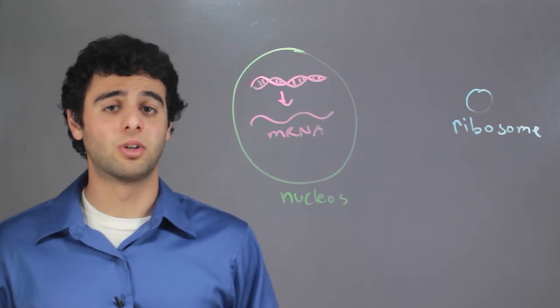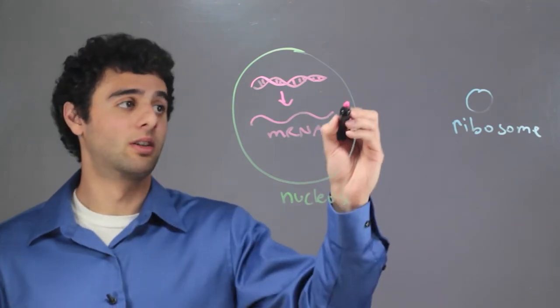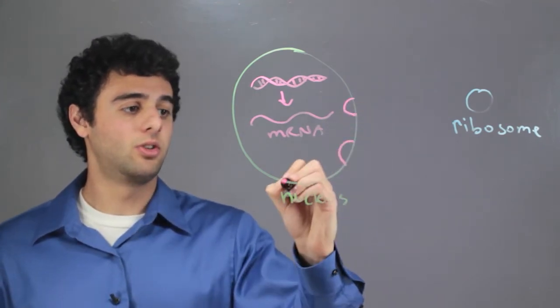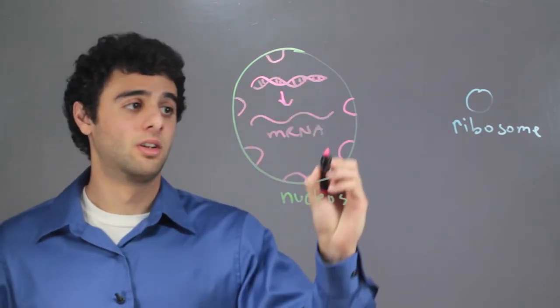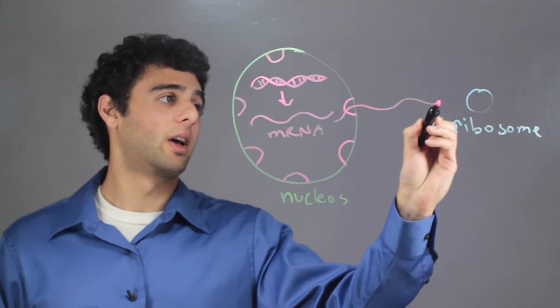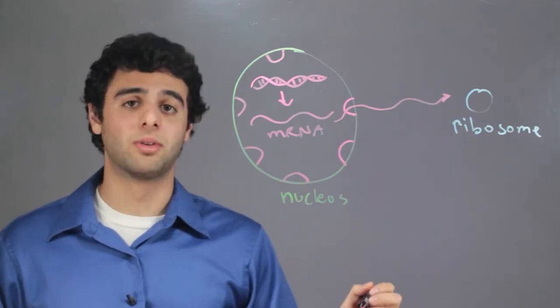This mRNA is what's going to be leaving the nucleus. It leaves the nucleus through one of these nuclear pores and makes its way over to the ribosome.